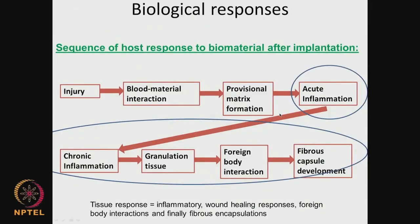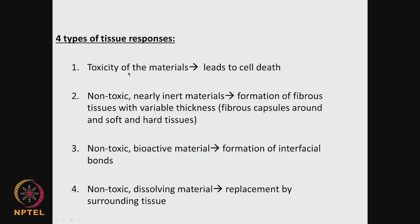First: toxicity of the material — the material itself may be toxic, or there could be some leachates that are toxic. There could be some acids getting leached — lactic acids, acrylic acids, or silver nanoparticles — all these could be very toxic because of local concentration gradients, so there could be cell death. We can study this in vitro; for example, an assay called the MTT assay, which I talked about a couple of classes back, allows us to look at the viability of cells. We can incubate the biomaterial with cells like L6 or 3T3, which are mostly muscle-related cells.